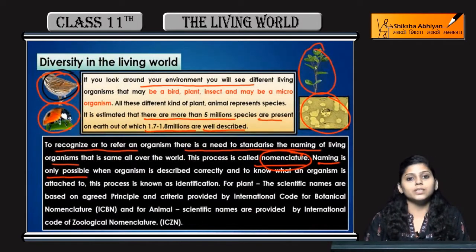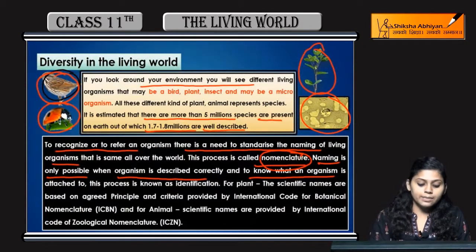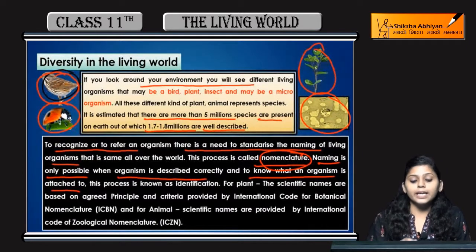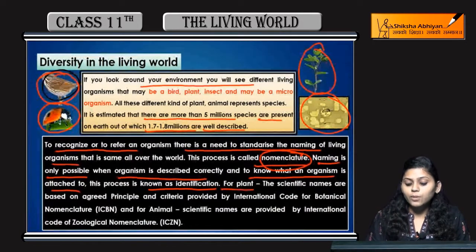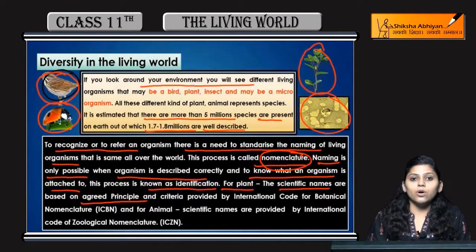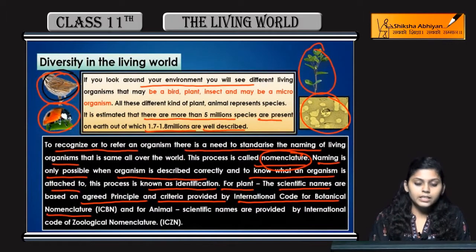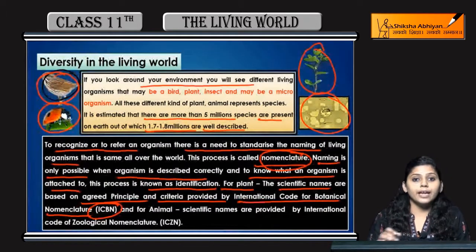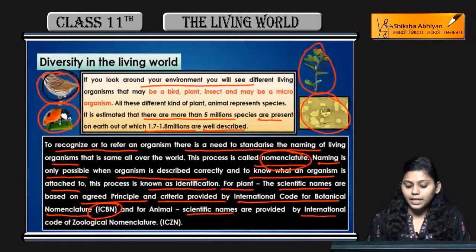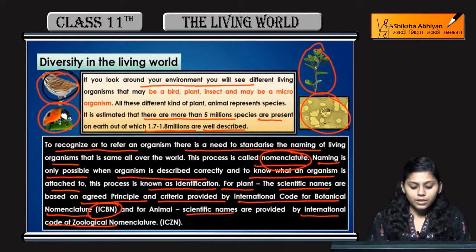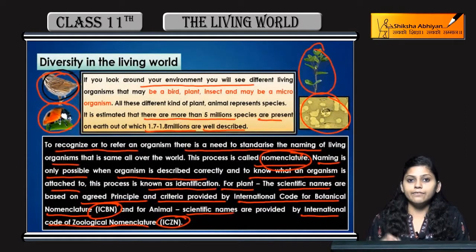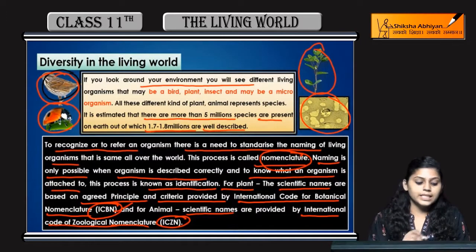Naming is only possible when an organism is described correctly — this process is called identification. For plants, the scientific name is based on the principles and criteria provided by the International Code for Botanical Nomenclature (ICBN). For animals, the scientific name is governed by the International Code of Zoological Nomenclature (ICZN).